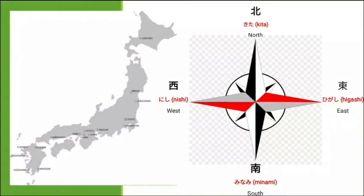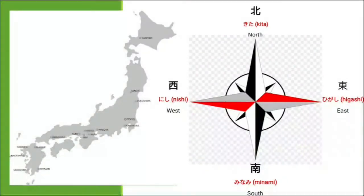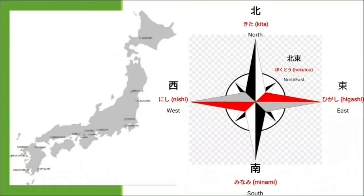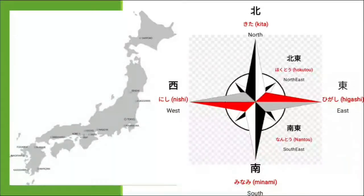Of course, meron tayo North-East, South-East, South-West, and North-West. Madali lang naman syang ma-memorize. So, sabihin ko mamaya. We have North-East — North-East is Hokuto. South-East is Nanto.